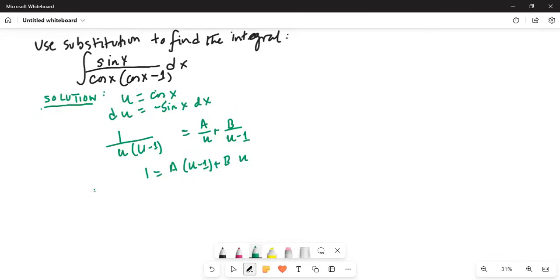So when u is equal to 0, then leads to 1 equal to A times minus 1, which leads to A is equal to minus 1. And when u is equal to 1, then we get 1 is equal to B times 1, which leads to B is equal to 1.